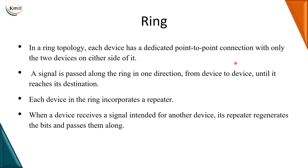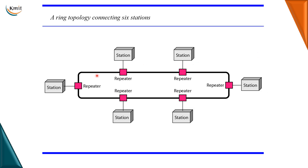Coming on to the next topology, that is our ring topology. Ring topology is very interesting where we will have point-to-point links only, but each device has a dedicated point-to-point connection only with its two devices on either side of it. The signal in ring topology will travel only in one direction, meaning the data transfer is unidirectional. Each station makes a dedicated point-to-point link to the stations on either side, and as such all the stations form a ring.